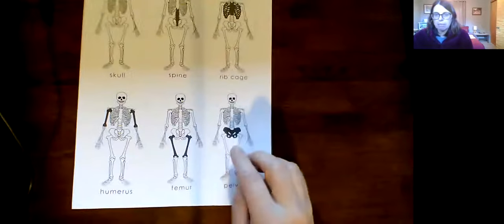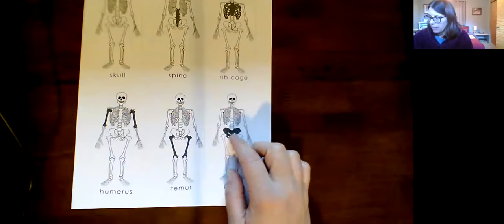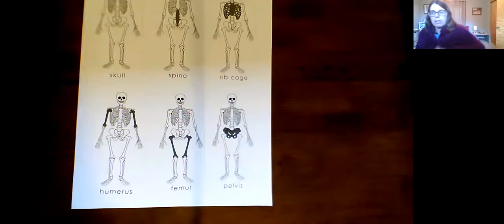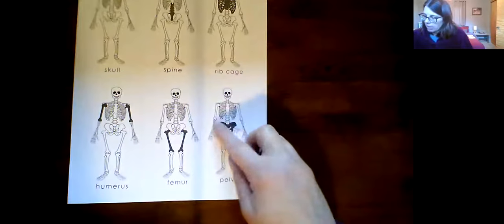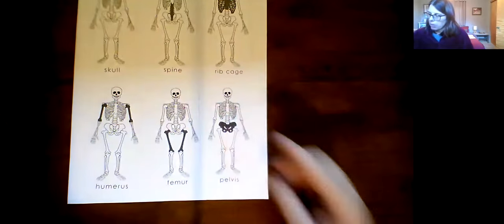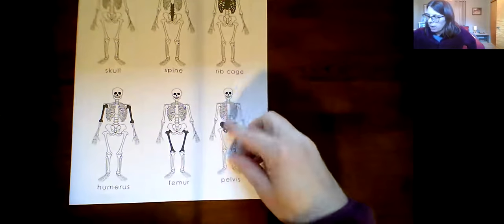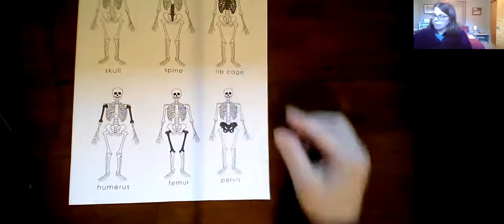And then over here to this butterfly looking bone. That's your pelvis. And that's like where your hips come. That's where your femur comes up here and connects in here. And that's like where your hips are. Your pelvis in the center of your body. Your spine, you can see, comes down into your pelvis also.